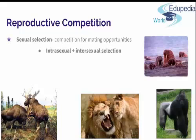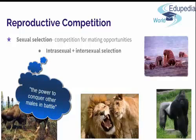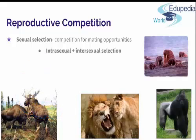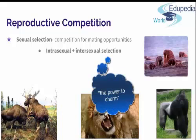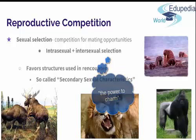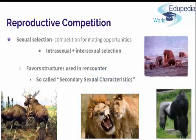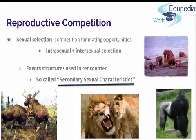Intrasexual selection refers to interaction between the members of one sex, or 'the power to conquer other males in battle,' as Darwin put it. The other type, intersexual selection, refers to essentially mate choice, or nicely called 'the power to charm.' Sexual selection leads to the evolution of structures used in combat with other males, such as deer's antlers and ram's horns, as well as ornamentations used to persuade members of the opposite sex to mate, such as long tail feathers or bright plumage. These traits are called secondary sexual characteristics.